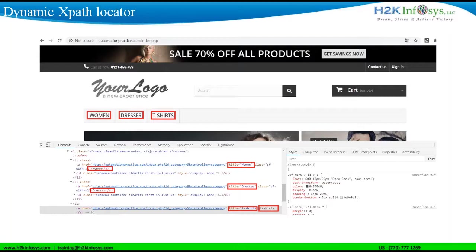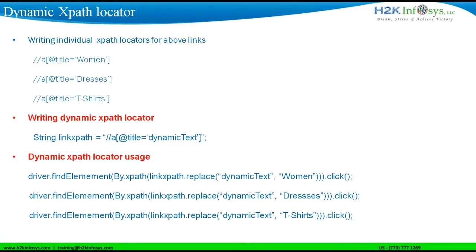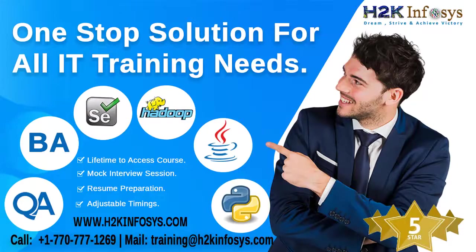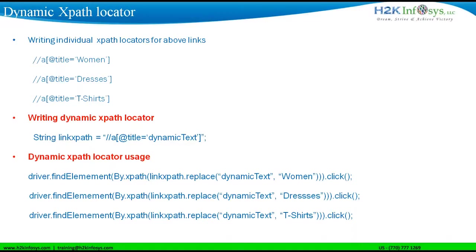Assuming a scenario where we have to click all these three links, how we generally write is we write an XPath something like this. So for three links, we write three XPaths — one is //a which contains title equal to women, dresses, t-shirts, and so on. But actually this can be managed with a single dynamic XPath, because if you observe the behavior here, the title is only getting changed, but the rest of the XPath attribute or the HTML tag name is the same.